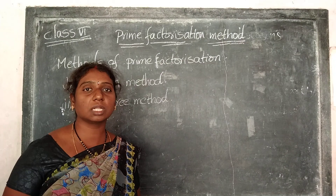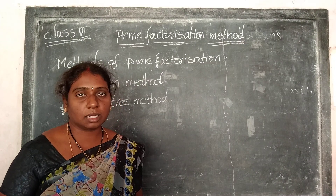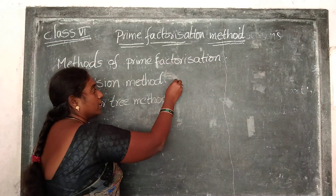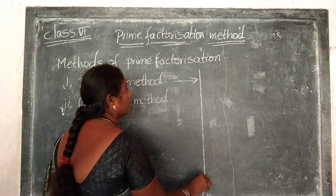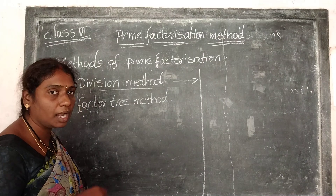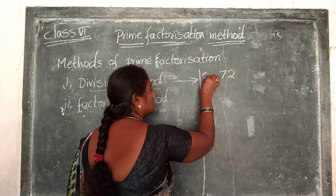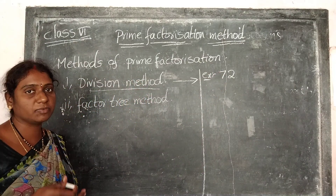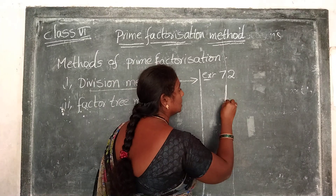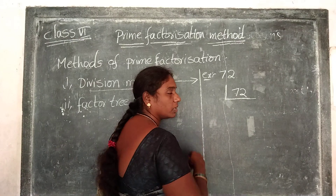First of all I am going to explain the first method: the division method. How to find out the factors using division method? I am going to explain with one example. I am going to take 72 as an example. Now how to find out the factors of 72 using division method? First of all, write down 72 and check the divisibility. First of all take the 2.